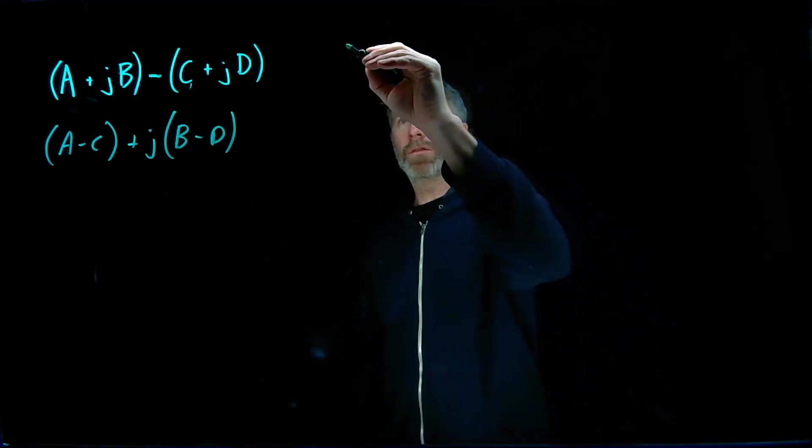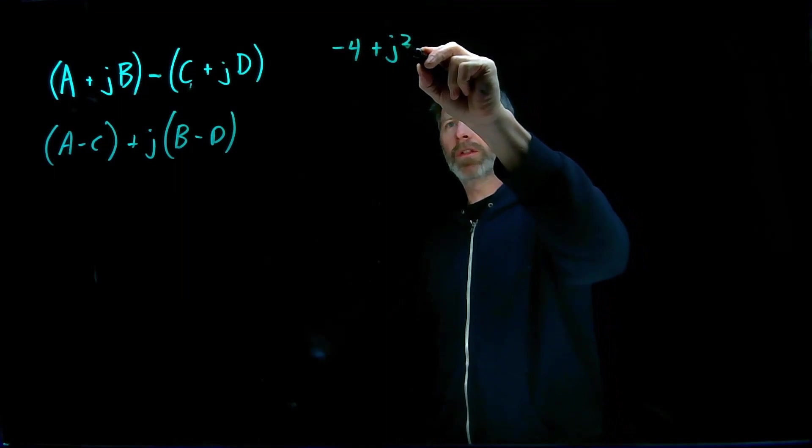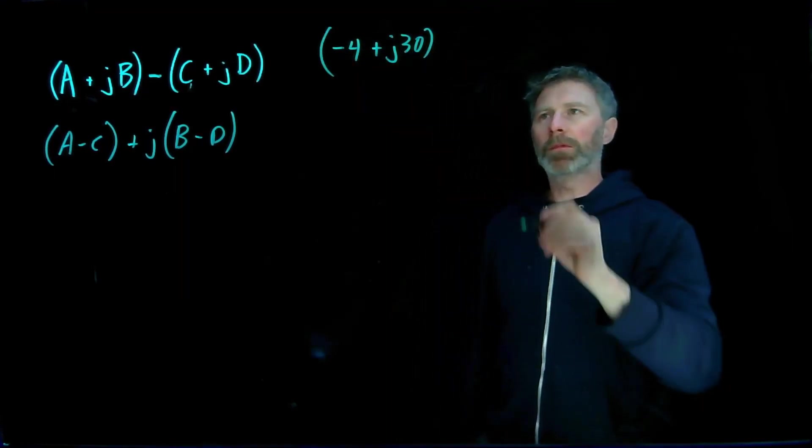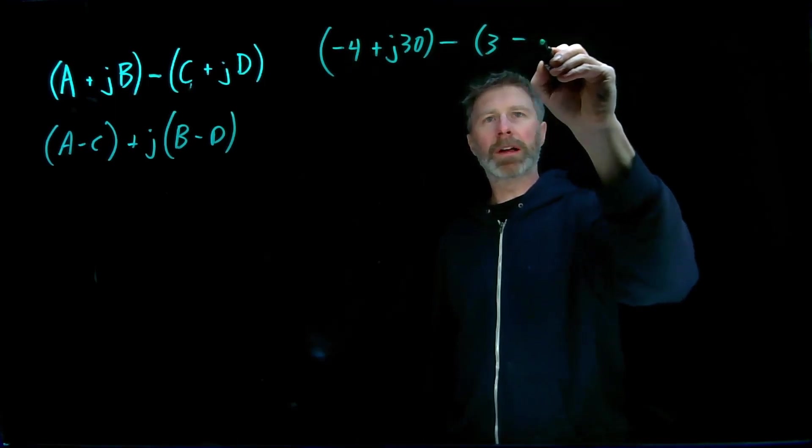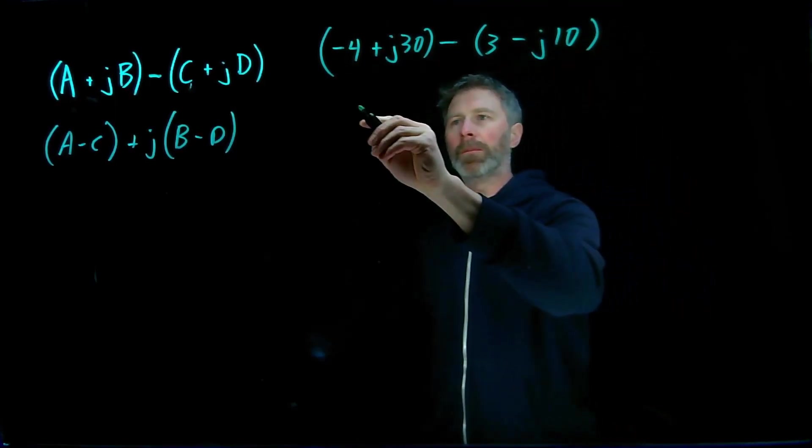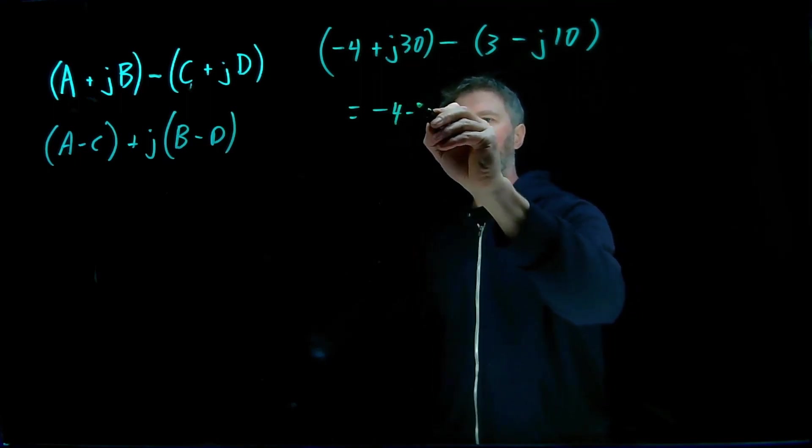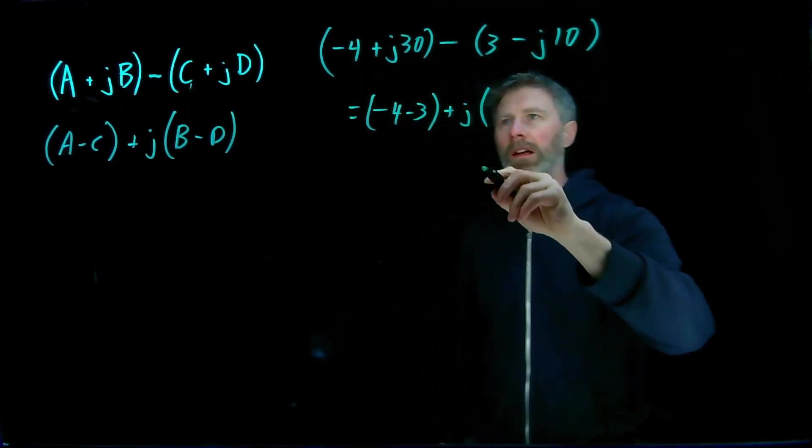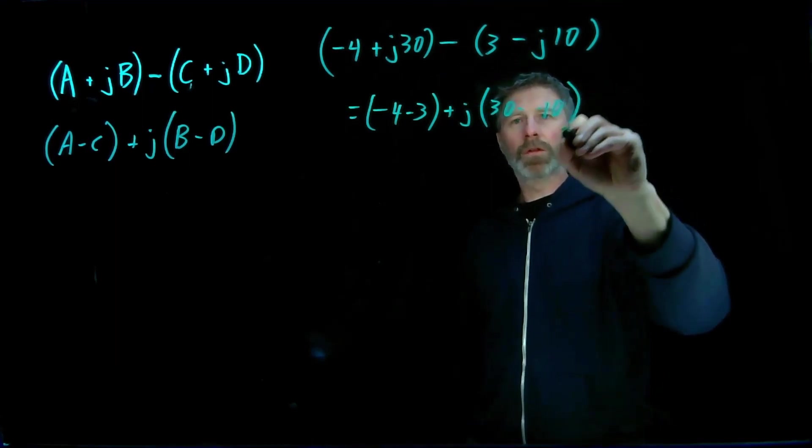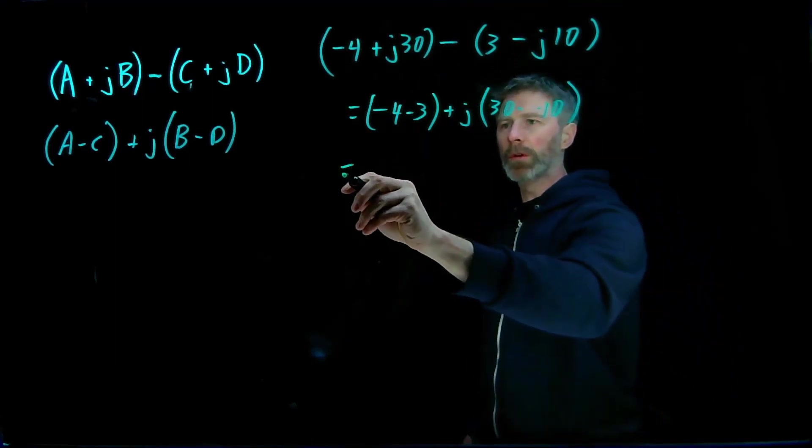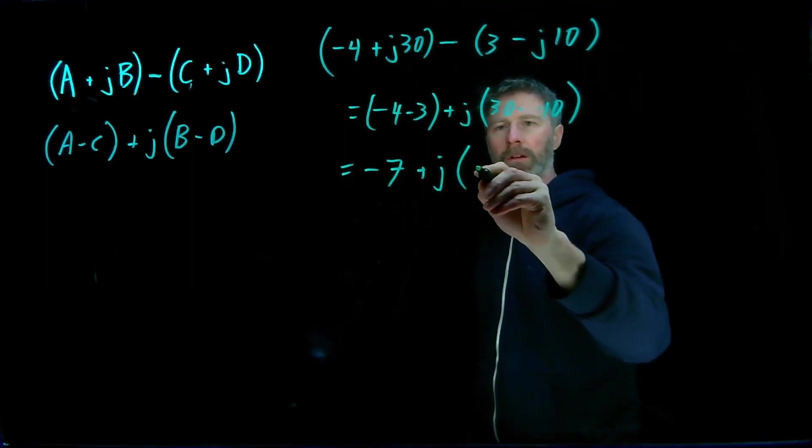And so as an example, if I have minus 4 plus j30 as one complex number, and I need to subtract 3 minus j10. Well, it's going to be minus 4 minus 3 for my real part, plus j times 30 minus negative 10 for the imaginary part. And so this will work out to minus 7 plus j40.